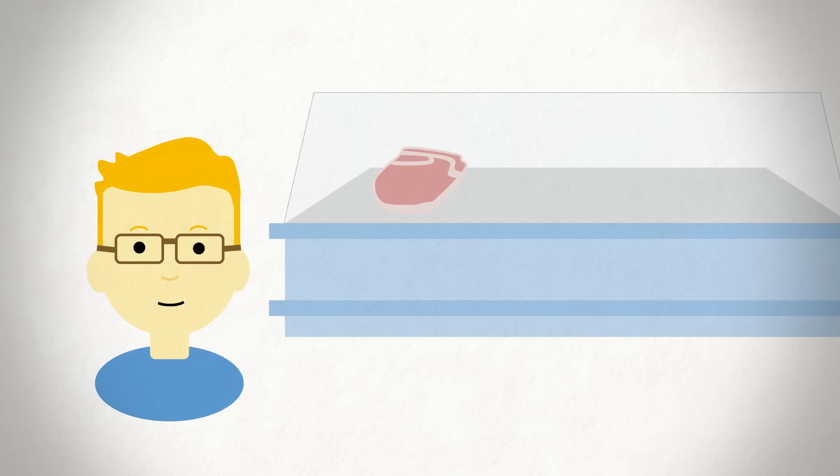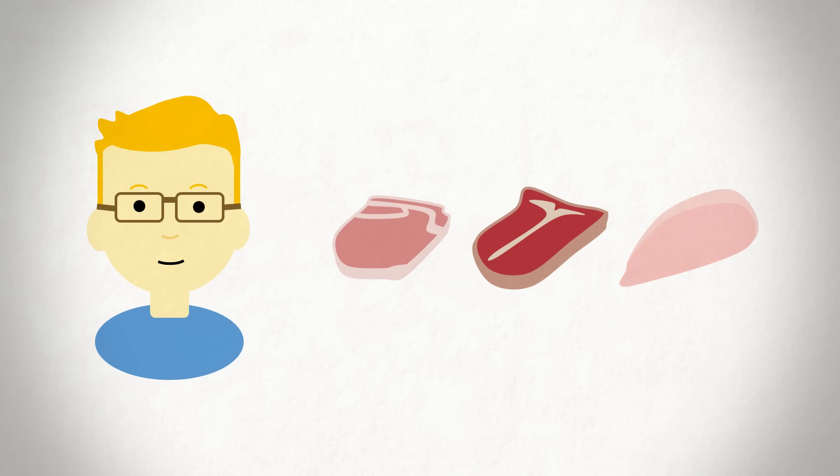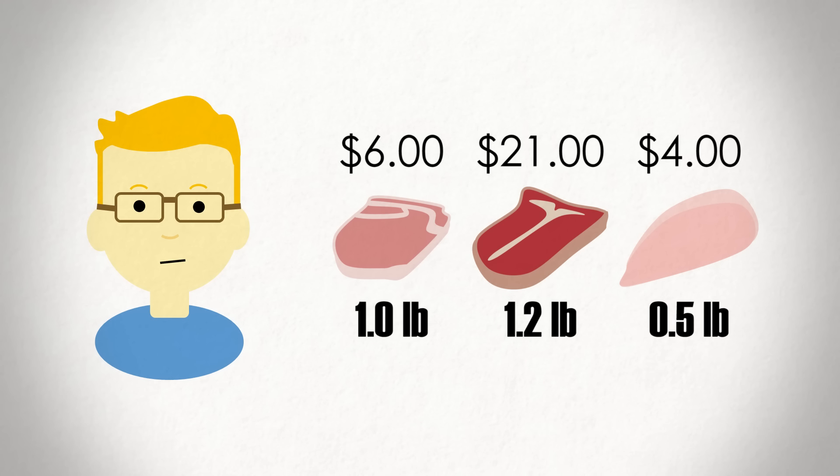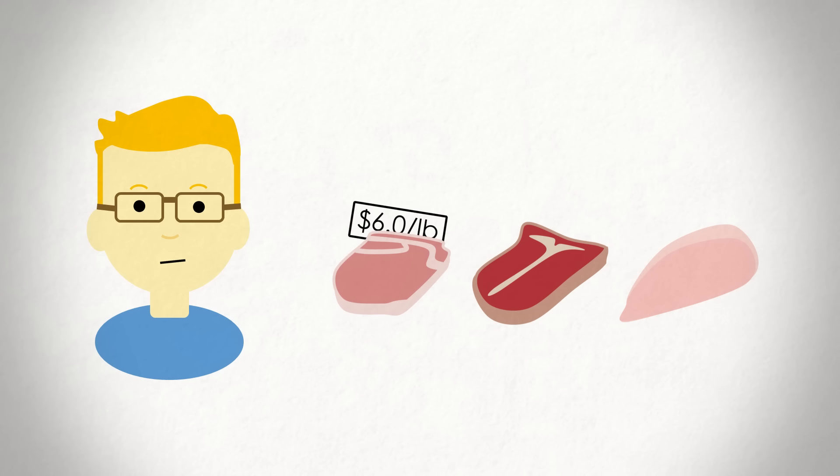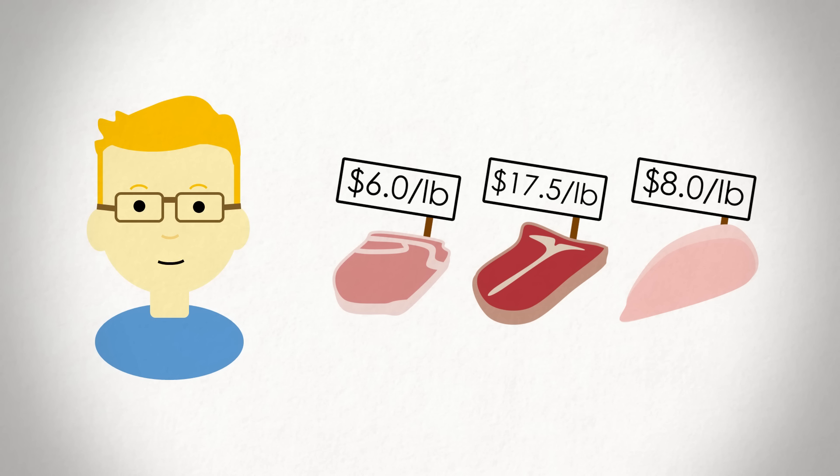Think of it as like a price per pound at a butcher shop. In shopping for pork, beef or chicken, it's difficult to compare the total prices since the quantity you get is different for each cut. But if you look at the price per pound, you can easily figure out which cut is the best bang for your buck. Multiples work in a similar way, allowing us to compare the price of a stock to the underlying fundamentals you get with the purchase.